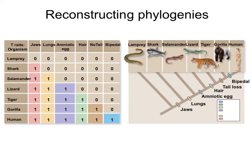So how do we reconstruct phylogenies? What we use are common traits. We look at which traits are shared among groups and based on that we decide to group them together. Here we have a table showing possible traits: jaws, lungs, amniotic egg, hair, tail, and being bipedal — if an organism has the trait it gets a one, if not a zero. Humans and gorillas share most of these traits except the last one — being bipedal, which is unique to humans. Since they share the most traits, the first step is to group them together, indicating a common ancestor from which they inherited those shared traits.